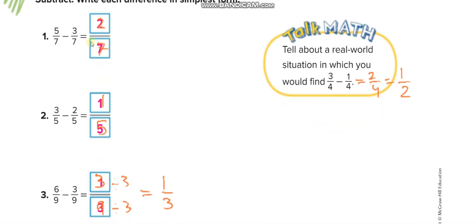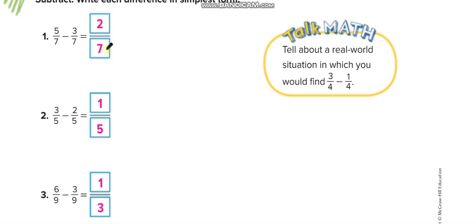Let me clear the screen. Next example: 5 minus 3 gives 2 over 7. We can't simplify it since we can't divide by the same number up and down. Another: 3 minus 2 gives 1 over 5 — we can't simplify that either.